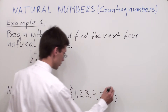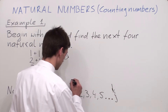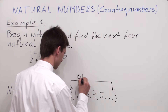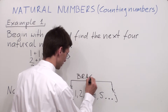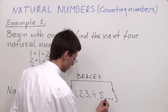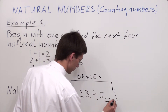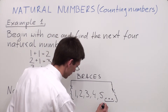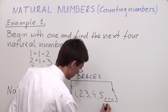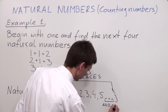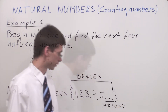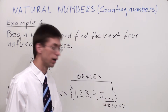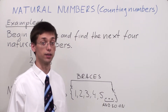So these two signs are called braces. And these three dots are read as 'and so on,' meaning that the set is infinite.